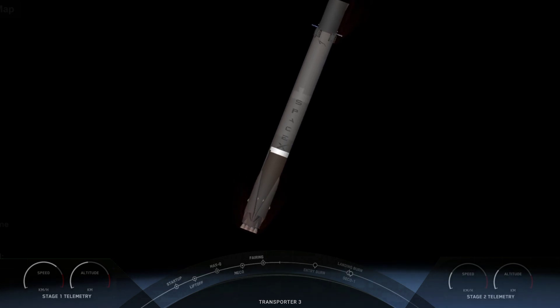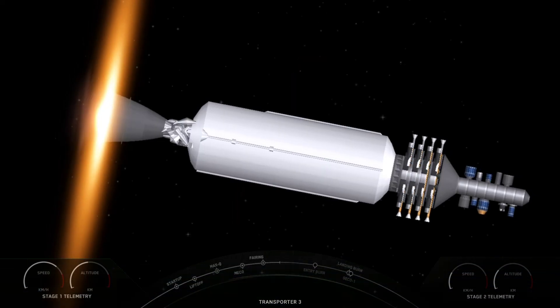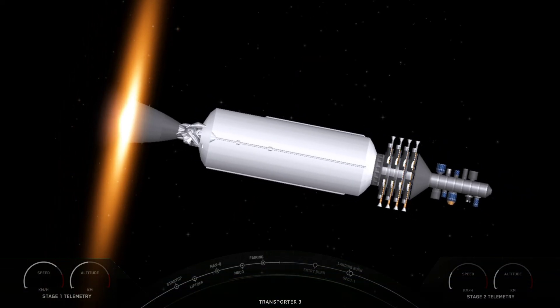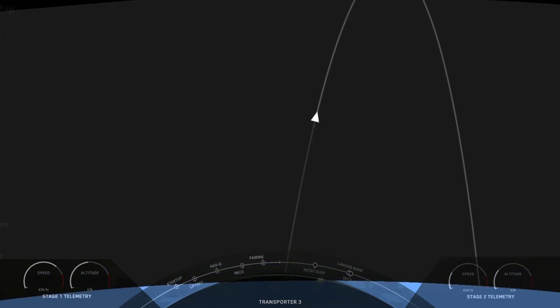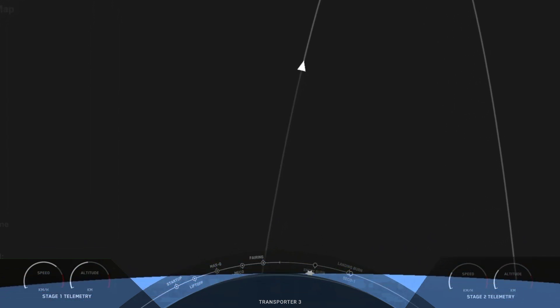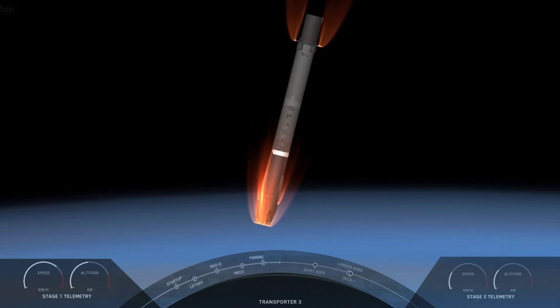On the left hand side of your screen we can see those grid fins have deployed. Falcon 9 has four hypersonic grid fins positioned at the base of the interstage and they orient the rocket during re-entry by moving the center of pressure. We can also see some white puffs of gas coming off from Falcon 9. Those are cold nitrogen gas which help with attitude control.